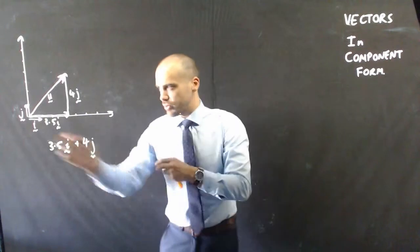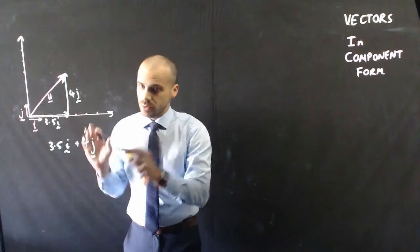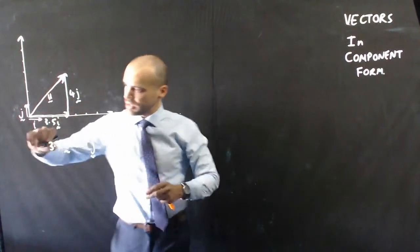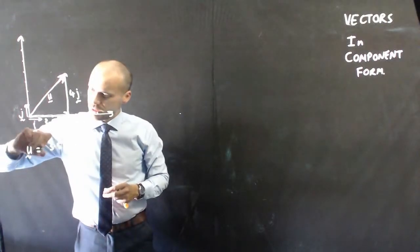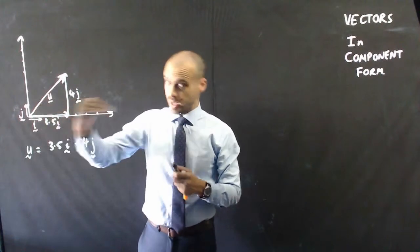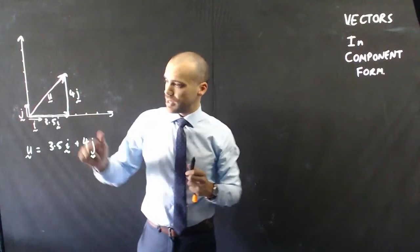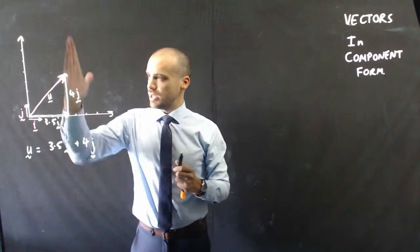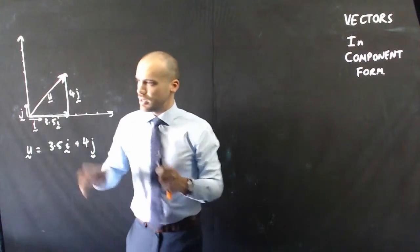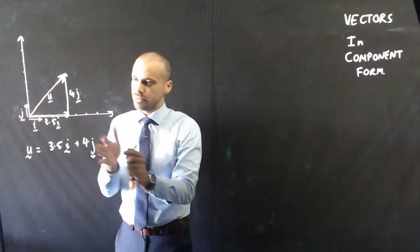And so by creating these i and j vectors, I can now talk about u in what's called component form. u, the vector u is equal to 3.5i in the x direction, because i will always go in the x direction, plus 4j, 4 in the y component there. It's a really useful tool to have, because it's going to let us do a bunch of cool stuff.